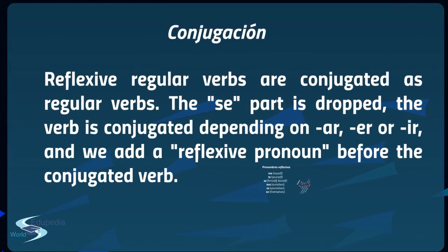So how do we conjugate reflexive verbs? Reflexive regular verbs are conjugated as regular verbs. The -se part is dropped, the verb is conjugated depending on whether it ends in -AR, -ER, or -IR, and we add a reflexive pronoun before the conjugated verb. Just remember we have already conjugated llamarse and many regular verbs, so this is not that difficult — you'll learn it by heart.